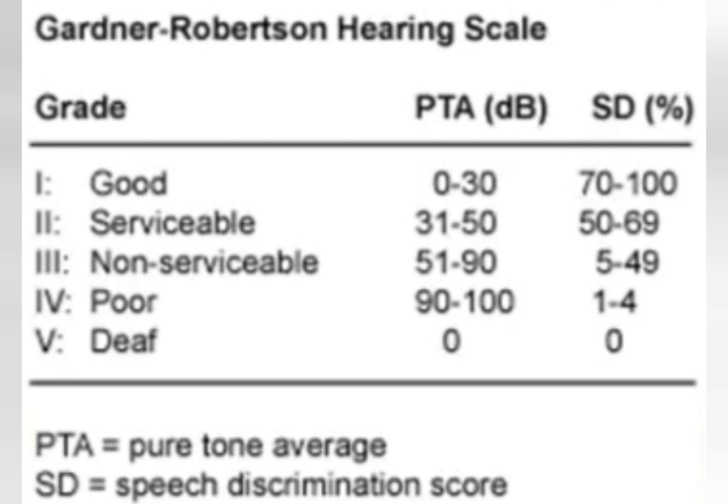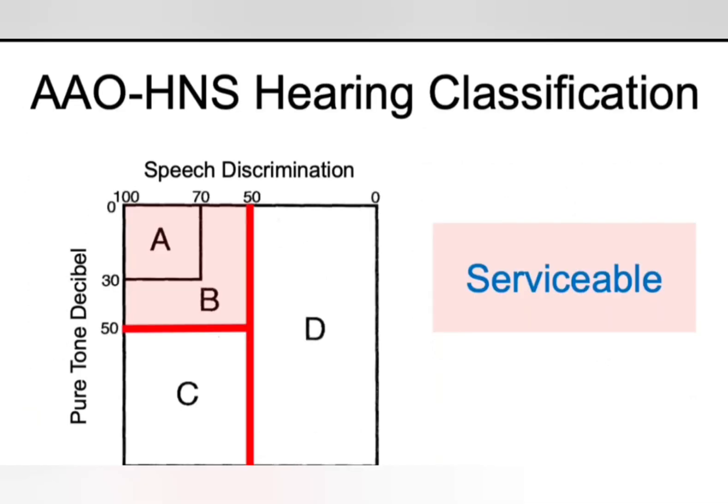If the hearing is less than 30 dB and speech discrimination is better than 70%, it is called good hearing. Serviceable hearing is defined as a PTA less than 50 dB and speech discrimination of at least 50%. If the PTA is more than 50 dB and speech discrimination is less than 50%, then it is non-serviceable hearing loss. Beyond PTA of 50 and speech discrimination below 50% is non-serviceable.